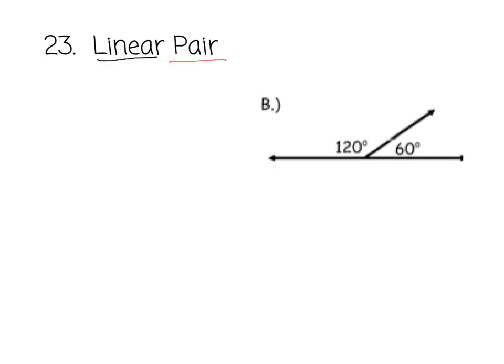Linear means line, pair means there's two of them. So two angles that make a line. They must be consecutive, meaning in a row. They must be adjacent to each other, so they have to have that common ray, they have to share that.